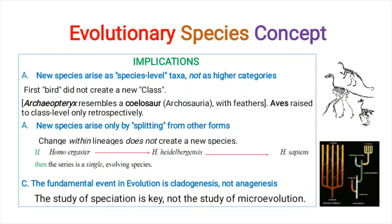The implication of the evolutionary species concept: new species arise as species-level taxa, not as higher categories. Evolution occurs at the species level — for example, Archaeopteryx, the first bird, did not create a new class. It resembled the archosauria dinosaurs that had feathers, but a single bird did not create a new class. New species only arise by splitting from other forms, as cladogenesis is the process by which new species originate.